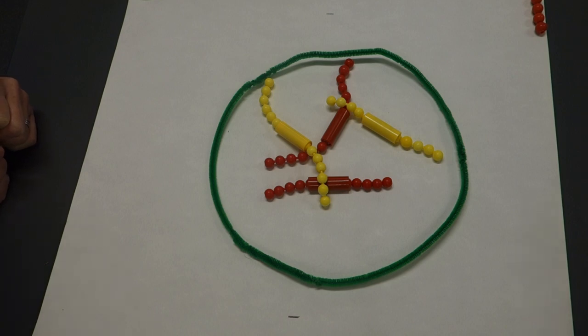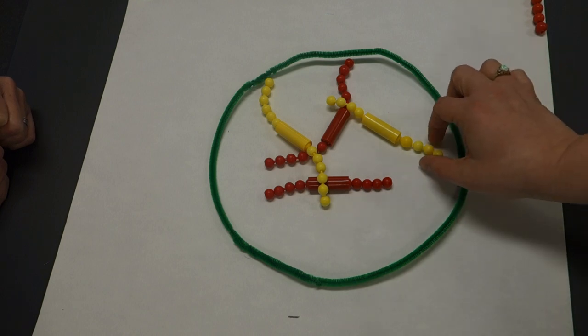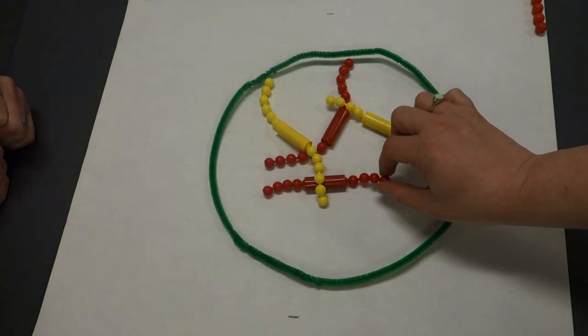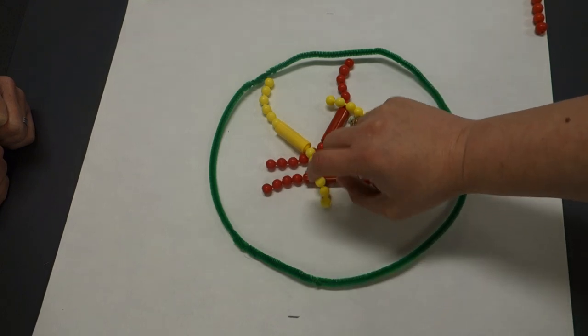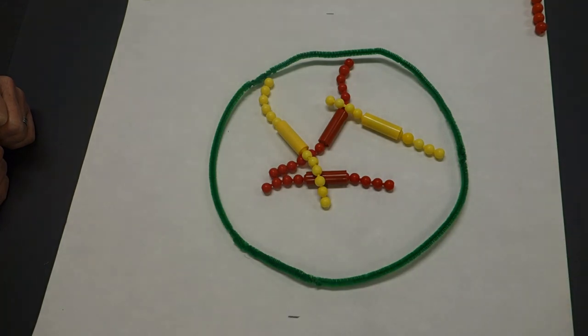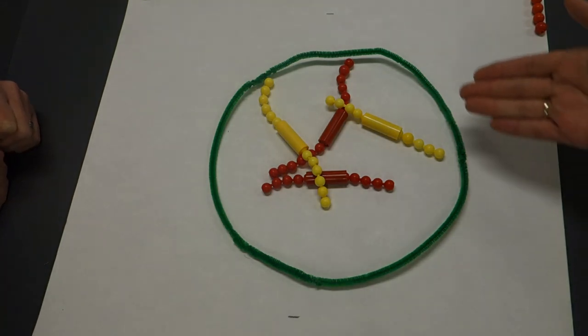So this cell is a diploid cell. It has two of each type of chromosome, so we're going to keep this simple. We're going to have one short yellow, one short red, so those are similar chromosomes, and we have one long yellow and one long red sitting inside of our beautiful nucleus.